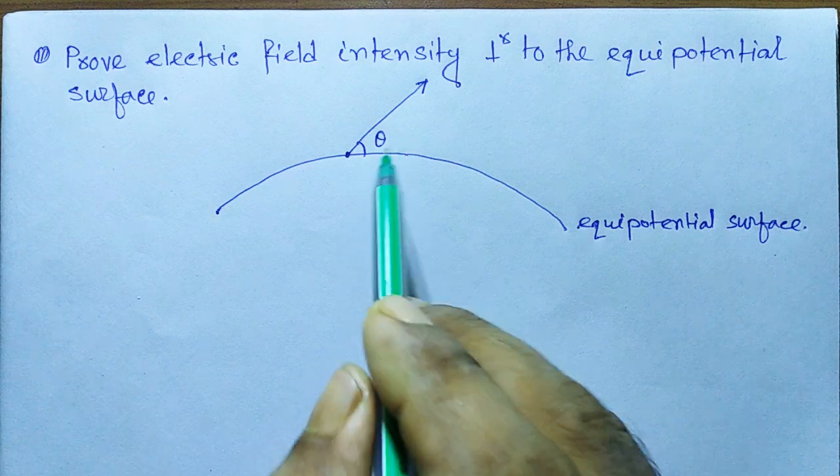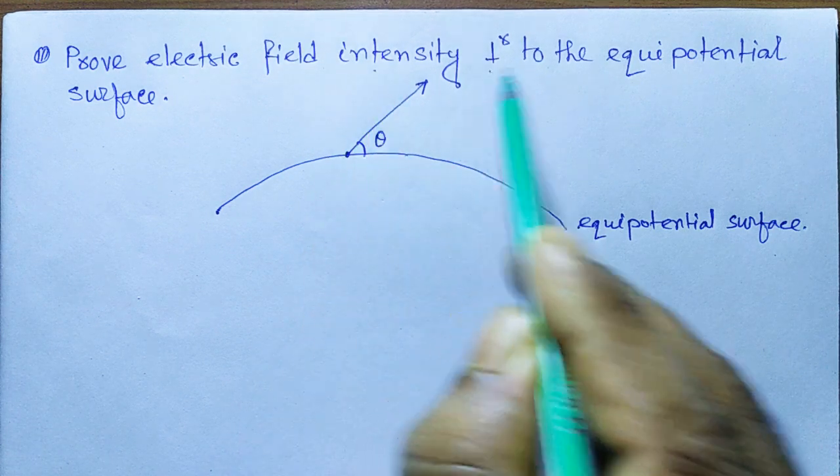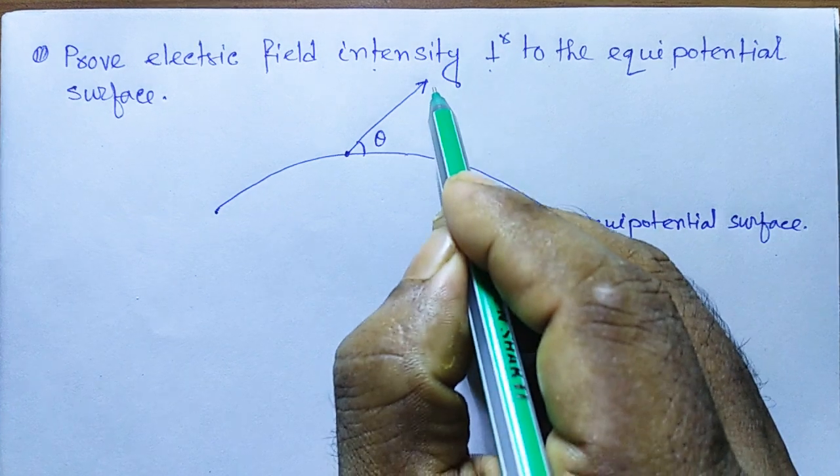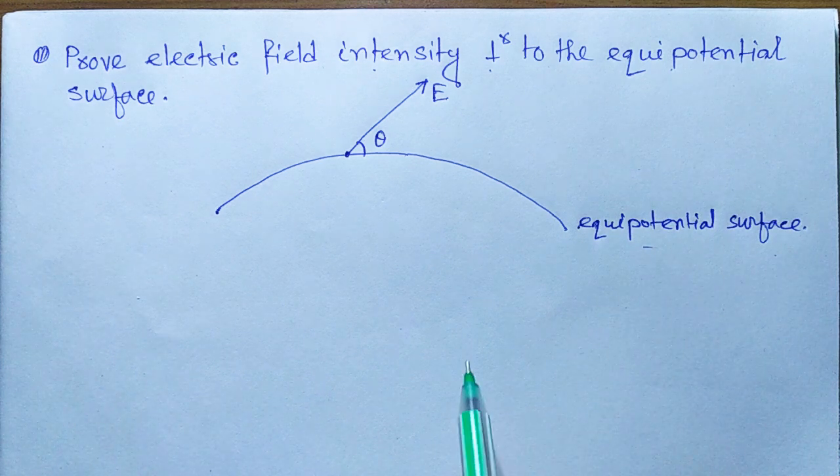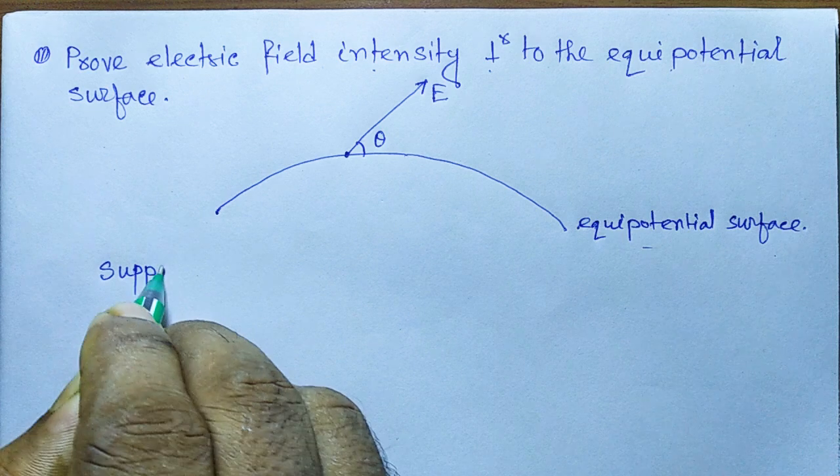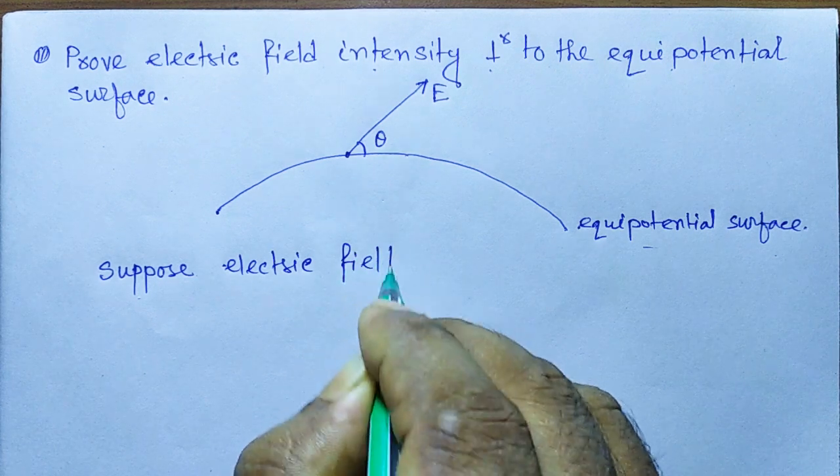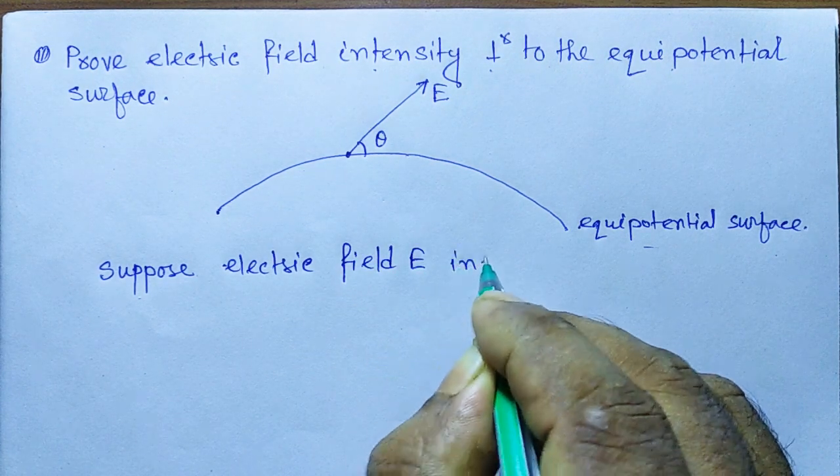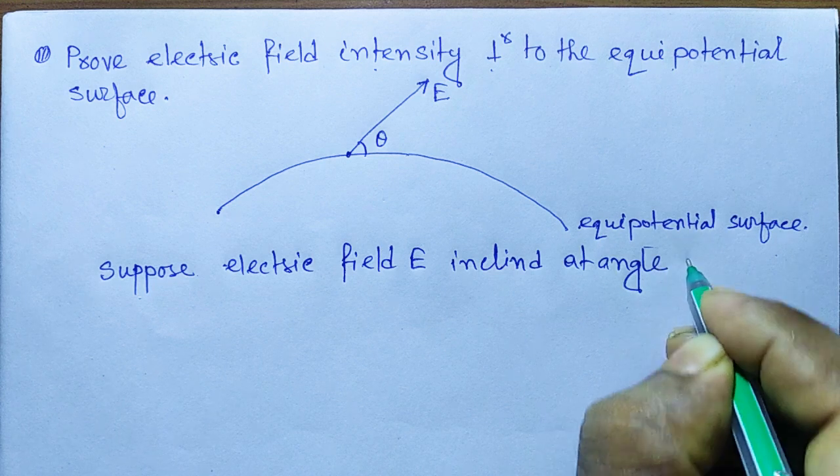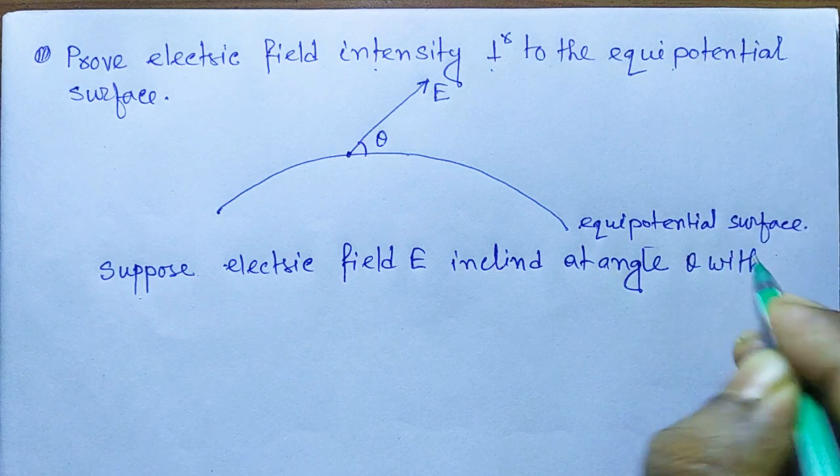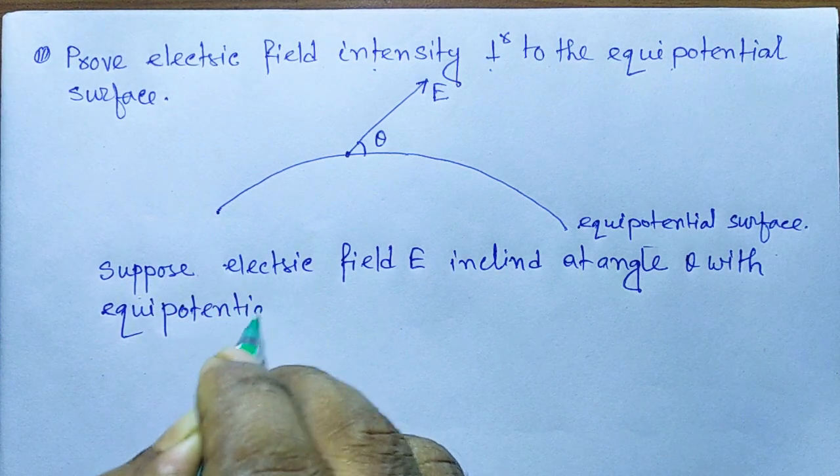We consider at any point on the equipotential surface, the electric field is inclined at angle theta with the equipotential surface. We have to prove theta equals 90 degrees because we need to prove the E vector is perpendicular to the equipotential surface. Suppose electric field E is inclined at angle theta with the equipotential surface.